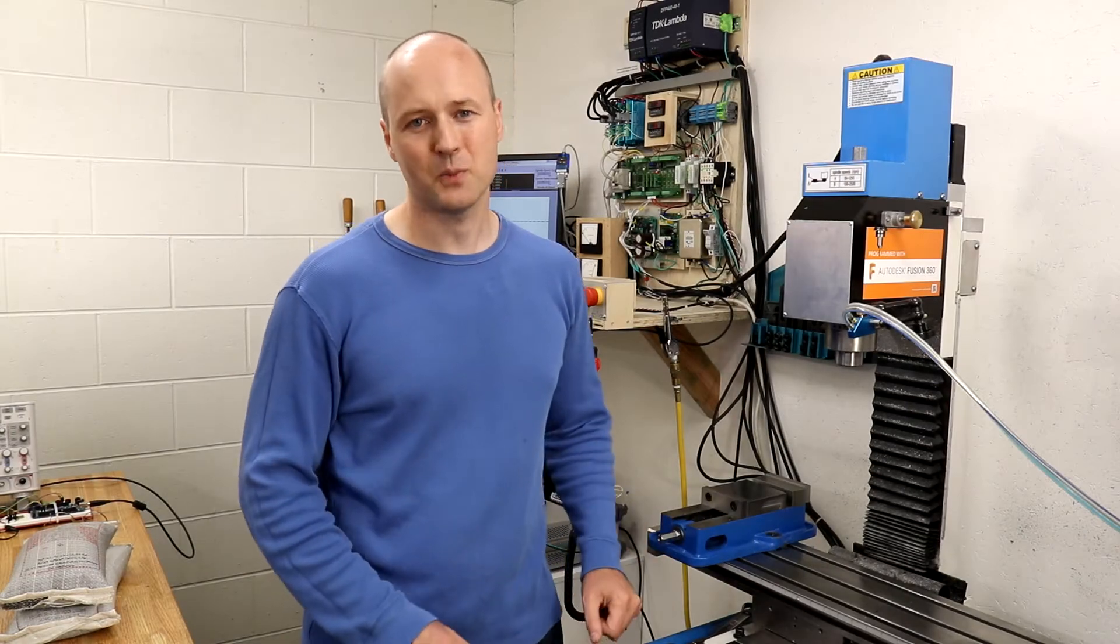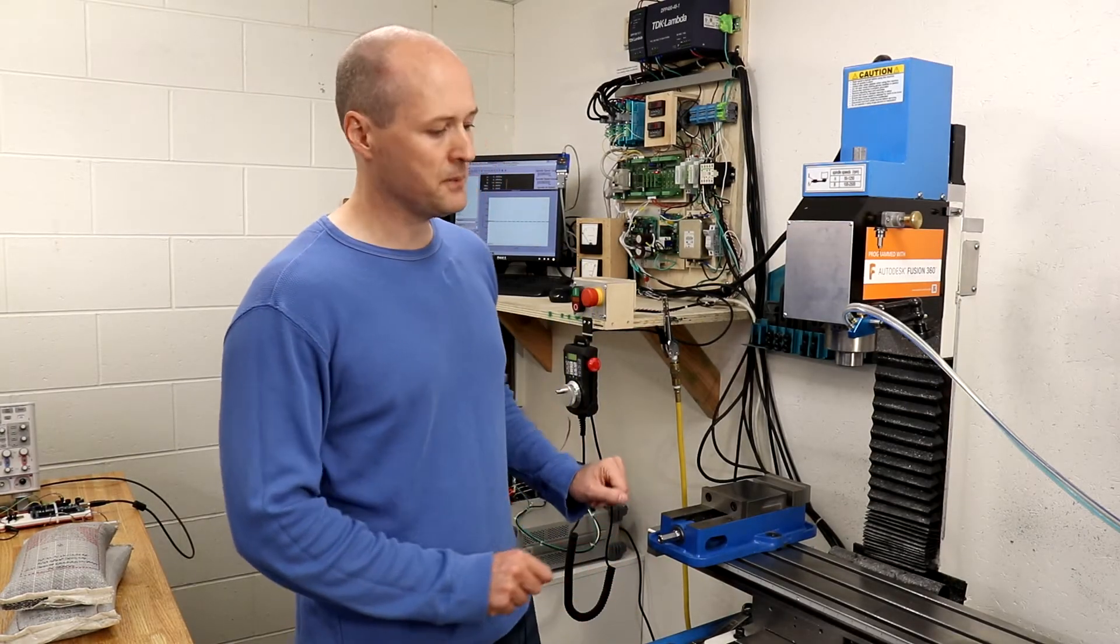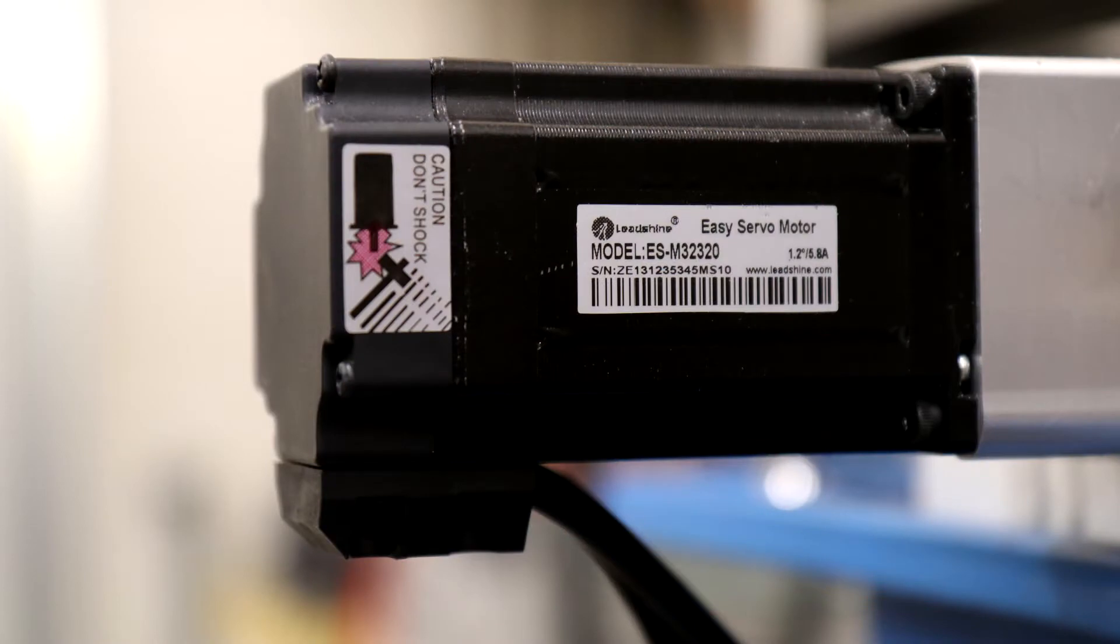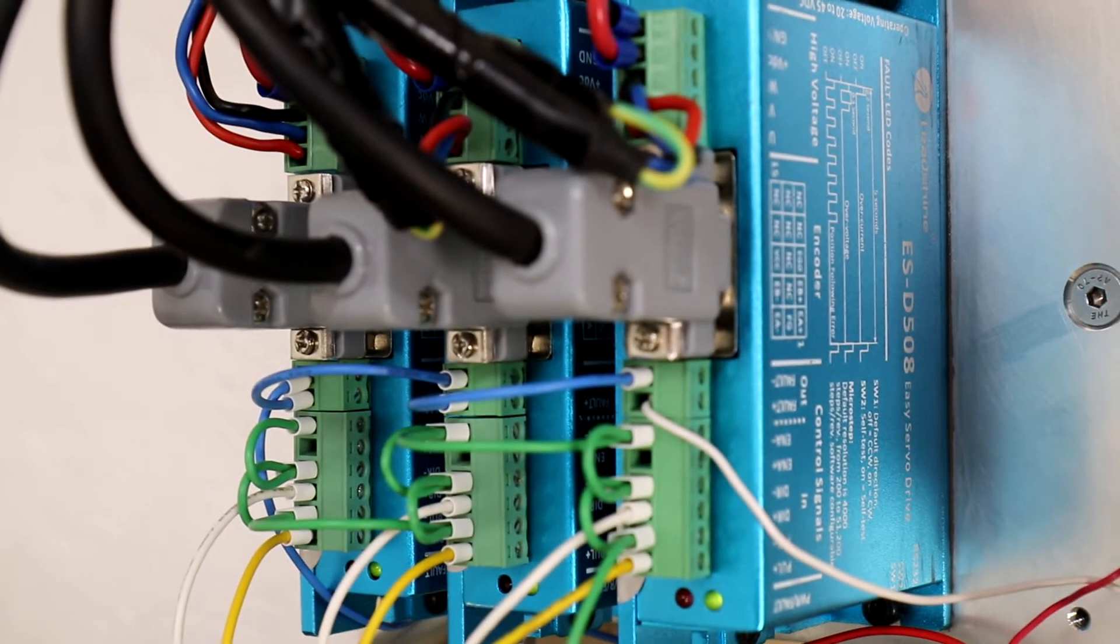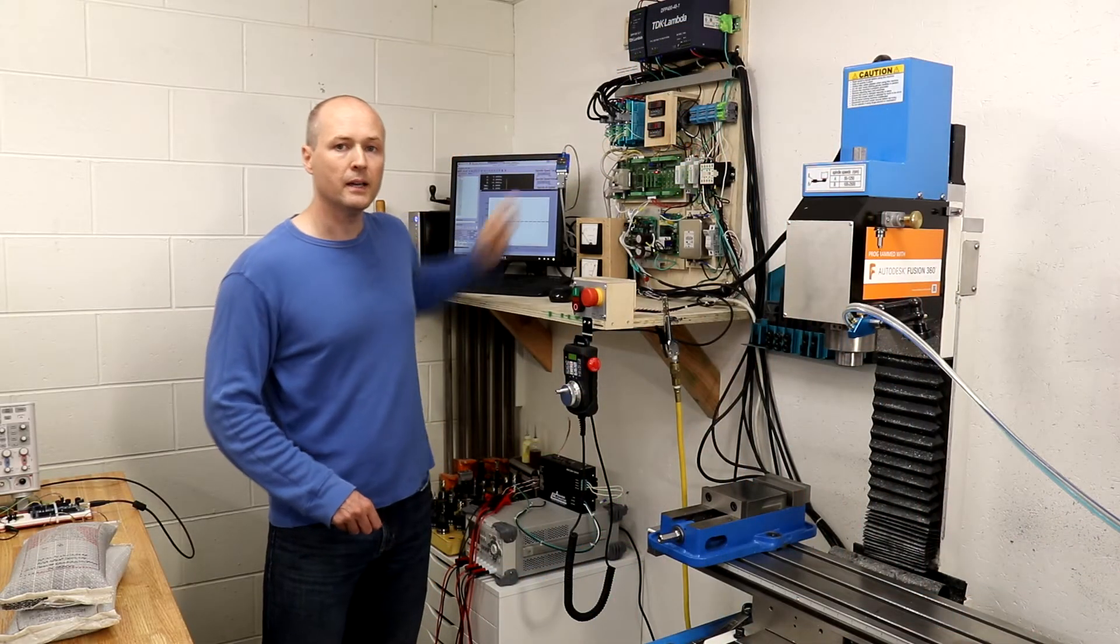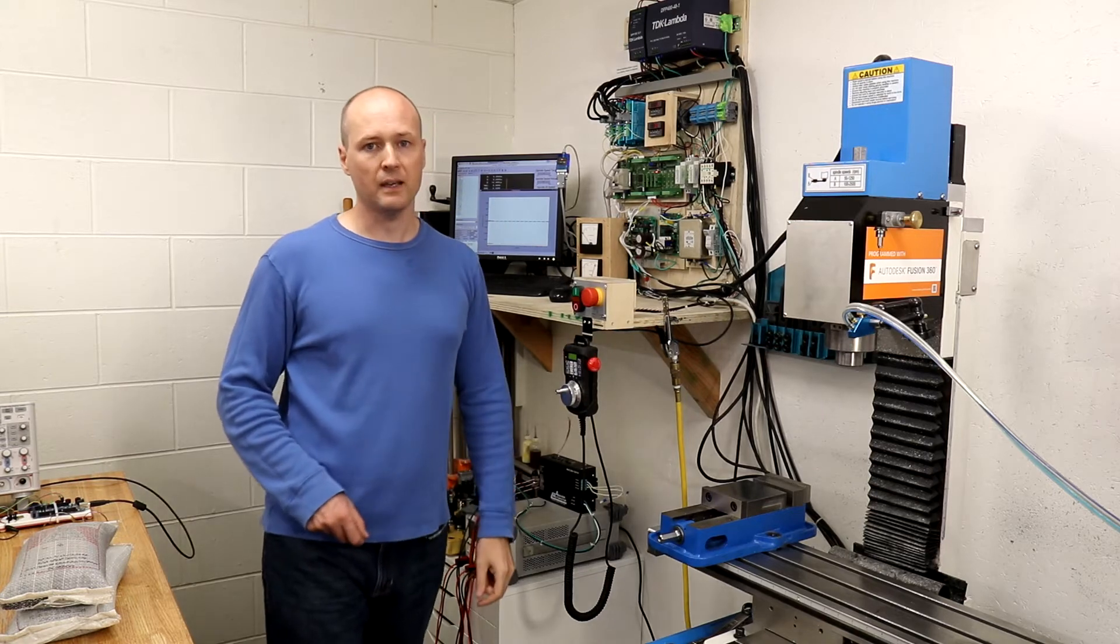Our CNC machine is a retrofitted Precision Matthews PM25 mill. Each axis has a 280 ounce-inch closed-loop LeadShine EZ-Servo stepper motor with built-in encoder. These are attached to LeadShine EZ-Servo drives which monitor the following error and respond using both a position and a current controller.